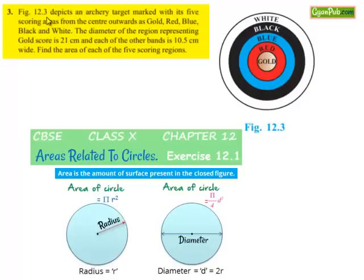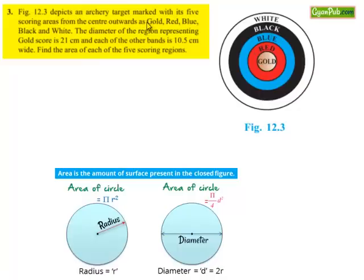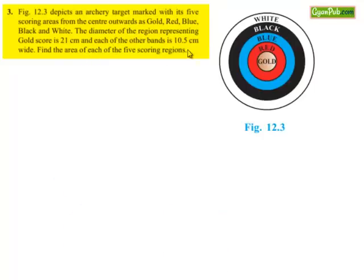Moving on to the third question: Figure 12.3 depicts an archery target marked with 5 scoring areas from center outward as gold, red, blue, black, and white. The diameter of the region representing the gold score is 21 cm, and each of the other bands is 10.5 cm wide. Find the area of the 5 scoring regions.